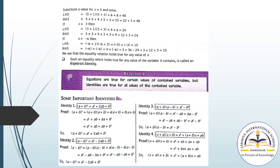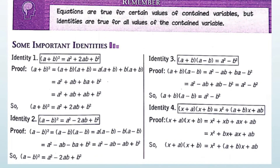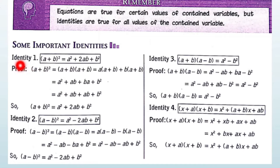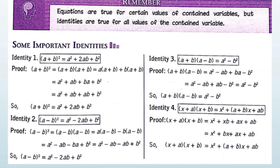What are the Algebraic Identities? Here you can see there are some important identities given here. Identity 1: (A + B) whole square equals to A square plus 2AB plus B square. These are the identities by which we can solve the questions.